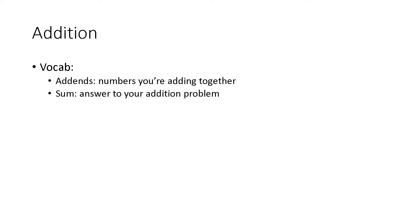We'll start with addition. First, some vocabulary that you should know when we talk about addition. The addends are the two numbers that you're adding together. So if I asked you what is three plus five, three and five are your addends. The sum is the answer to the actual addition problem. So three plus five is eight — eight is your sum.